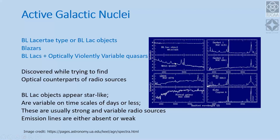BL Lac objects and a subset of quasars called optically violently variable quasars are collectively referred to as blazars. These could vary over a night. Most large-scale radio sources don't vary at all, whereas violently variable quasars and BL Lac objects exhibit very strong variability in both total intensity and polarization.